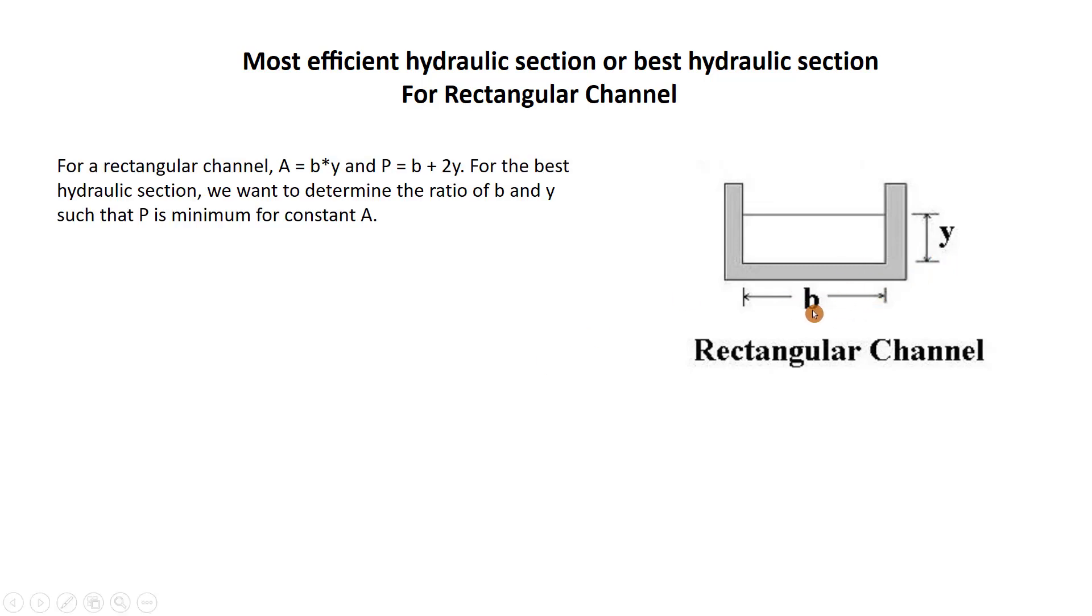We have this rectangular channel B and Y and the area equal to width multiplied depth of water and P equal to B plus 2Y. What's P? P is wetted perimeter. Wetted perimeter means the boundary of the channel which has a contact with the water.